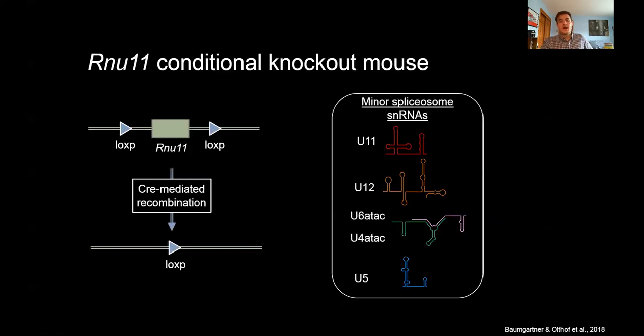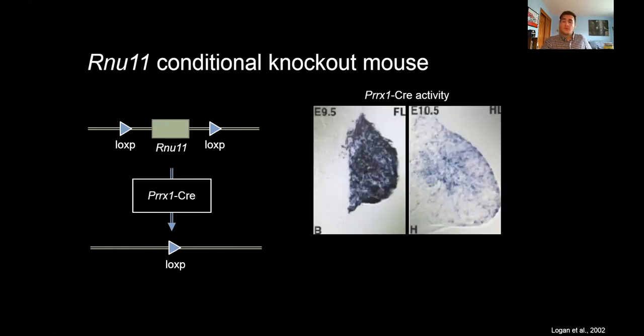To answer this question, I used our RNU11 conditional knockout mouse, which, through Cre-mediated recombination, ablates the U11 small nuclear RNA specific to and essential for minor spliceosome function, and therefore inhibits the minor spliceosome. I drove U11 loss in the developing limbs through PRX1 Cre, whose expression is primarily restricted to the developing limb buds. As you can see through this LacZ, at embryonic day 9.5, there is robust activity throughout the whole forelimb bud at E9.5, which is when the forelimb emerges. At E10.5, PRX1 Cre activity comes on in the hind limb, which is one half day after hind limb development has begun, and you can see it's more mosaic in its activity. This is going to be important for data that I will present soon.